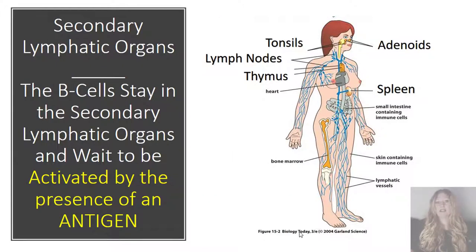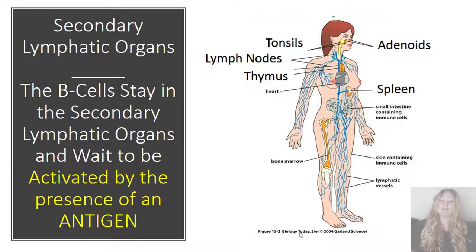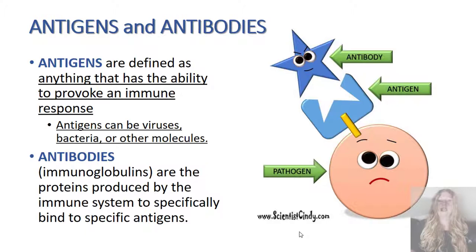The secondary lymphatic organs include your adenoids, spleen, tonsils, lymph nodes, and thymus. The B cells will stay in the secondary lymphatic organs until activated due to the presence of an antigen. Antigens are defined as anything that has the ability to provoke an immune response. Antigens can be viruses, bacteria, or other molecules. Antibodies, or immunoglobulins, are proteins produced by the immune system that are specifically designed to bind to specific antigens.